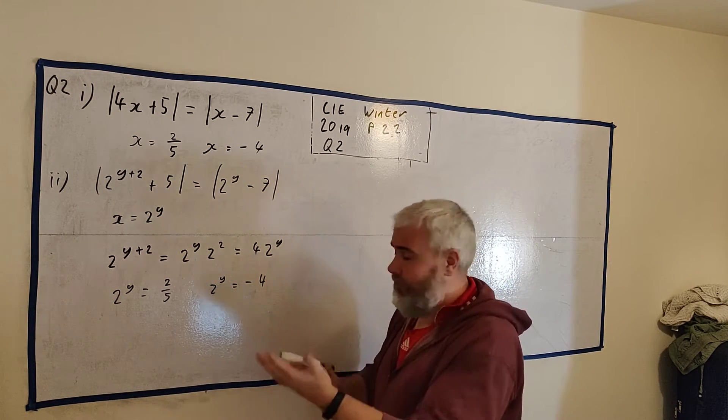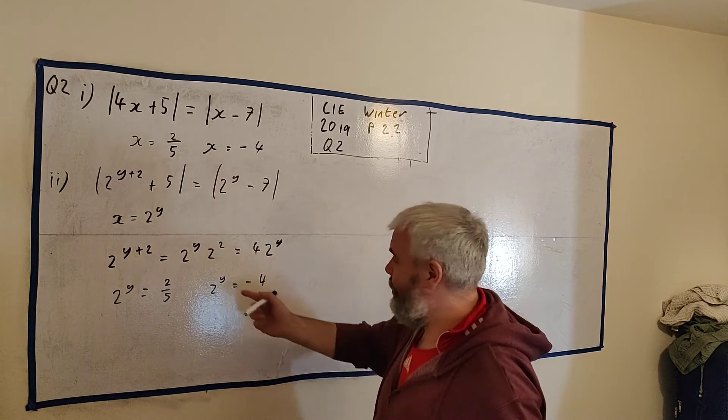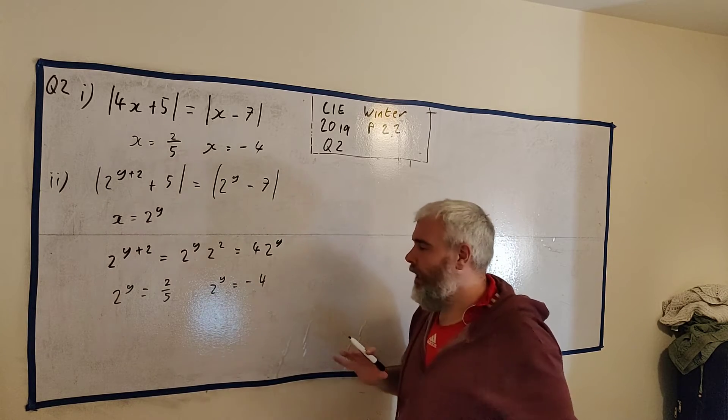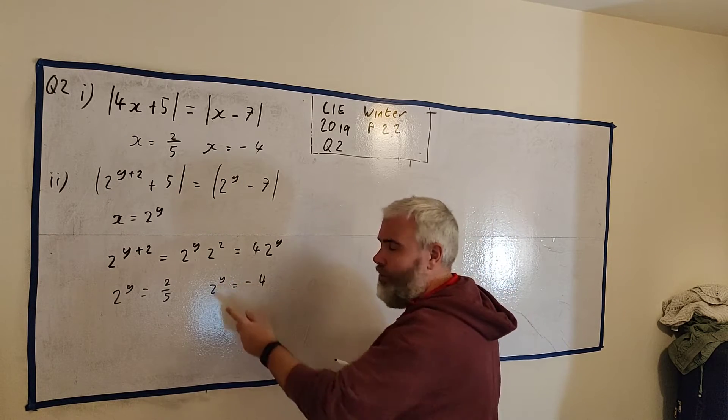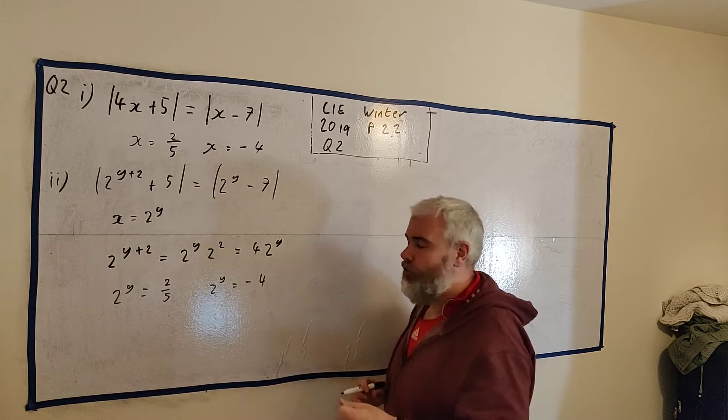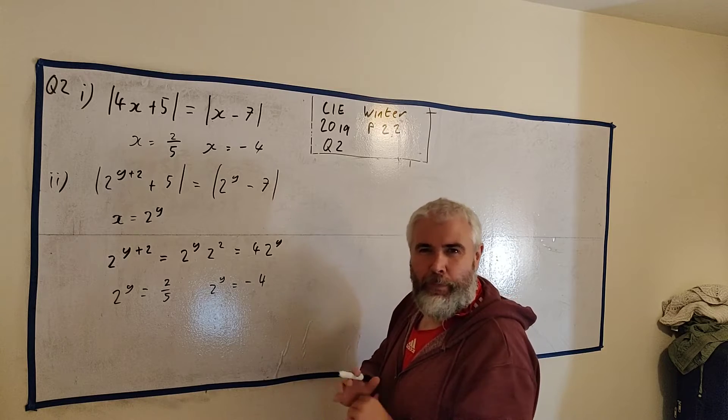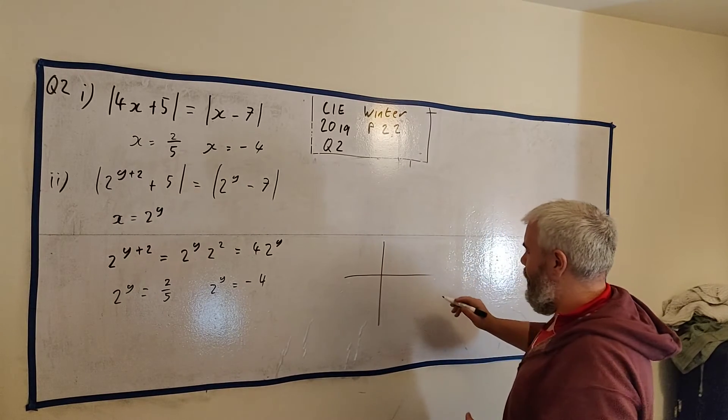When y gets bigger, like goes from 0 up bigger, like 2 to the power of 1, 2 to the power of 2, 2 to the power of 3, the number will get very big. And when it's a minus number, 2 to the minus 1 is a half. 2 to the minus 2 is a quarter. It will always get smaller and approach 0.